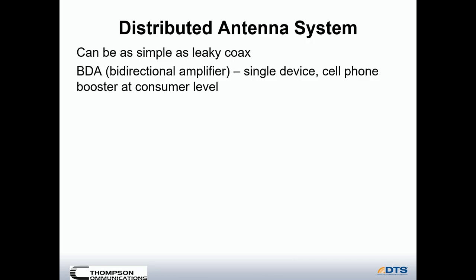A DAS can be as simple as a piece of leaky coax — a piece of coax that has perforations in the outer jacket to allow the signal to leak out, similar to a soaker hose that has a number of pinholes in it. These are often used in tunnels or elevator shafts.